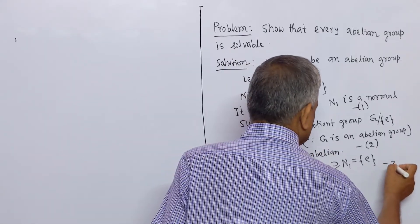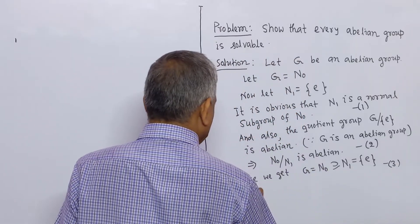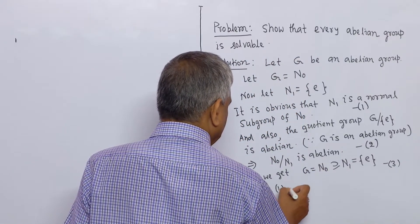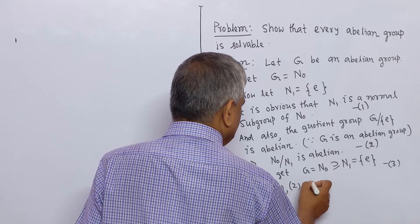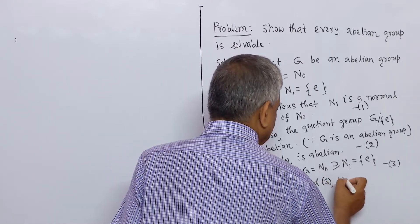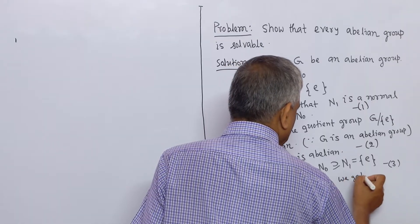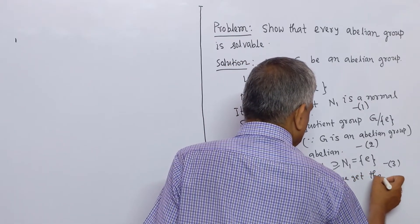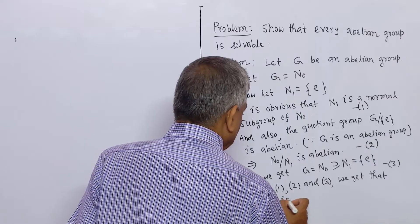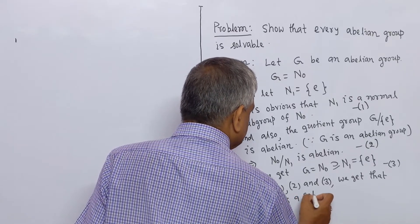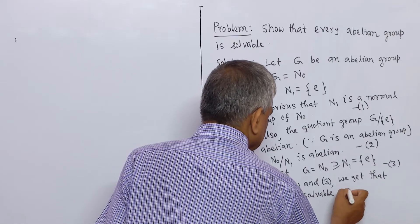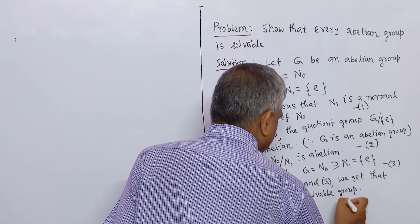From statements one and two we get that N₀ by N₁ is abelian. Therefore, from one, two, and three we get that G is a solvable group. Proved.